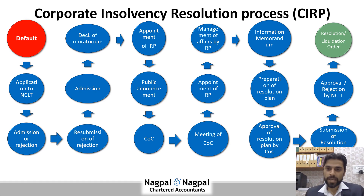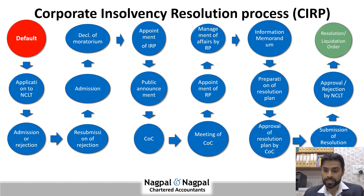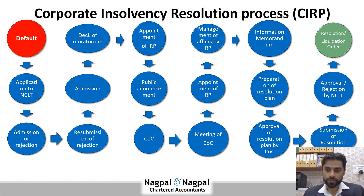Management of affairs by the RP and the Information Memorandum is prepared by the RP. Then preparation of resolution plans by the resolution applicants. Those plans will get presented to the Committee of Creditors. They approve the plan and then submit it to NCLT. NCLT will review the plans and, if accepted, the insolvency will get resolved. In case of rejection, the liquidation order is passed by the NCLT.